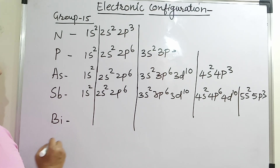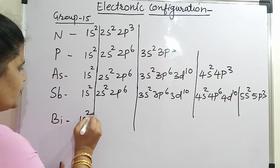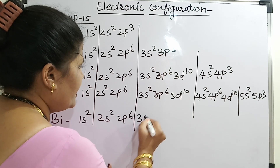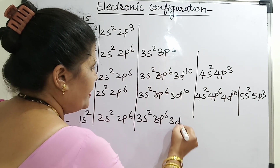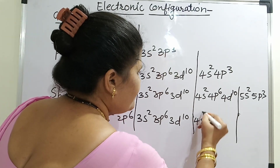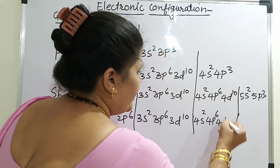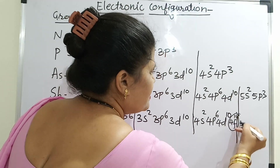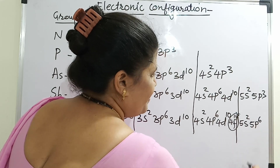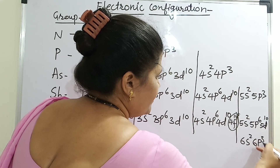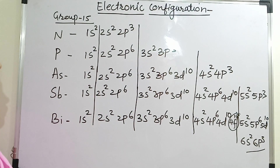Now come to bismuth — for bismuth you have to remember this. It will be 1s2, 2s2, 2p6, completely filled. Then 3s2, 3p6, 3d10. Then I will fill this completely: 4s2, 4p6, 4d10. Now here you have to introduce 4f14. Then 5s2, 5p6, 5d10, and then 6s2 and 6p3. This is the electronic configuration for group 15. Let us see group 16 now.